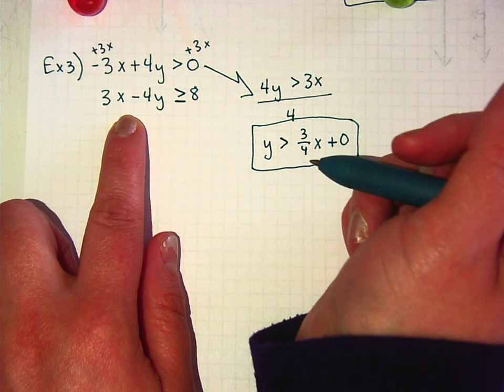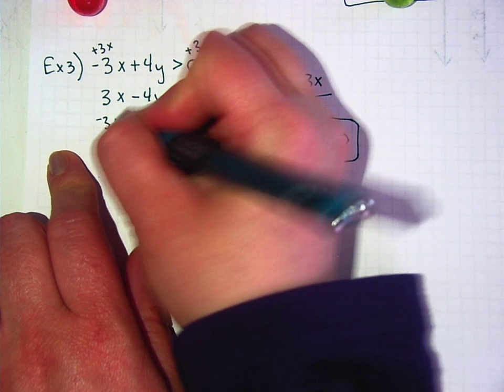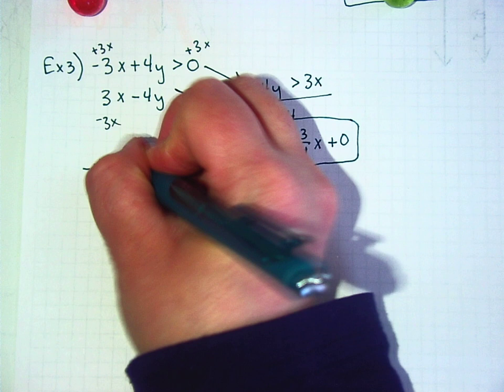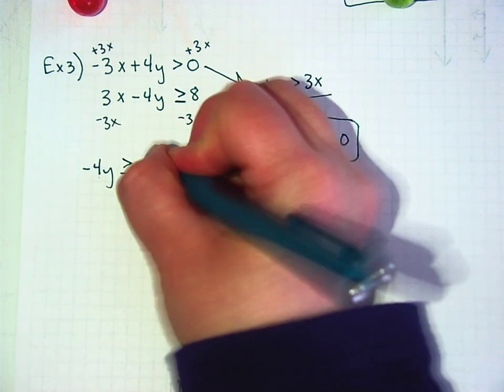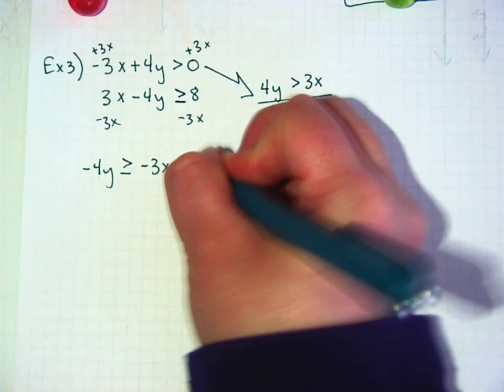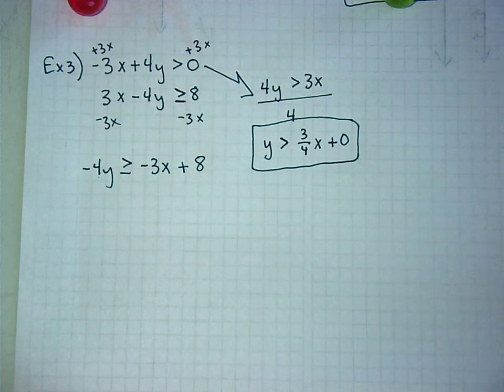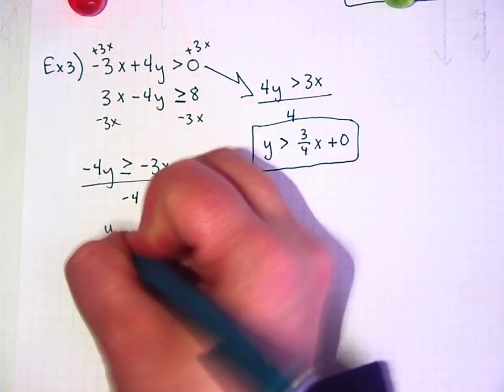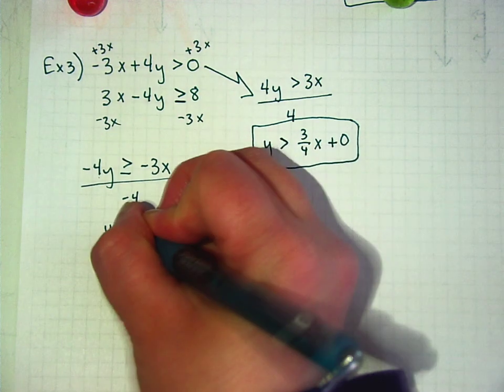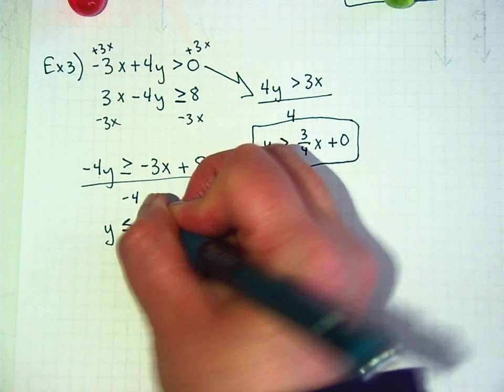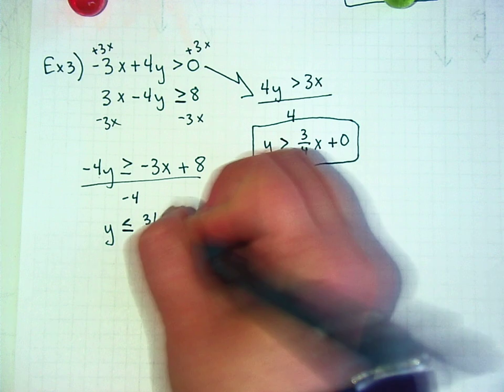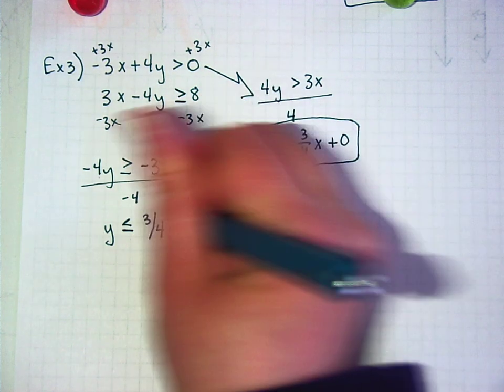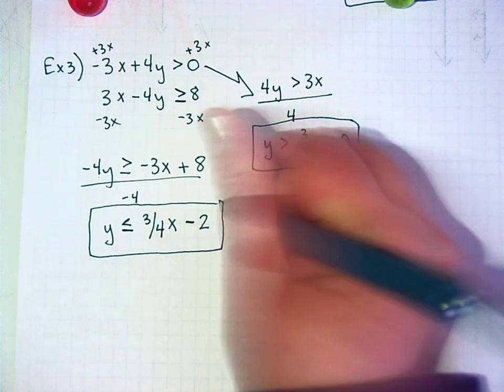How about this one? Minus 3x from both sides. That's negative 4y is greater than or equal to negative 3x plus 8. And then divide by negative 4, and if I divide by a negative, flip the sign, now it's less than. Negative divided by negative is positive 3 fourths. 8 divided by negative 4 is negative 2. All right, these are the two ones I'm graphing.